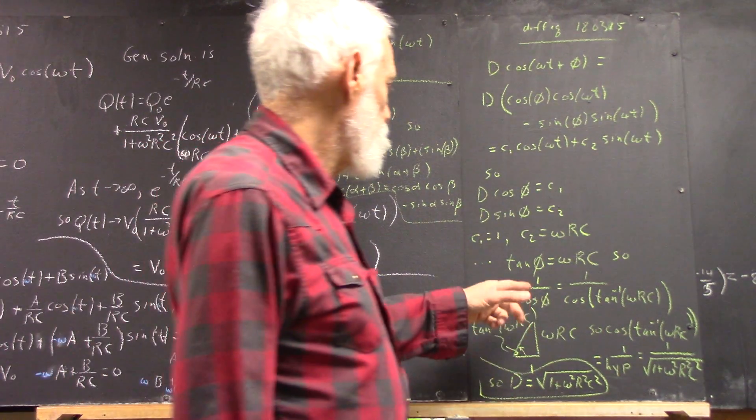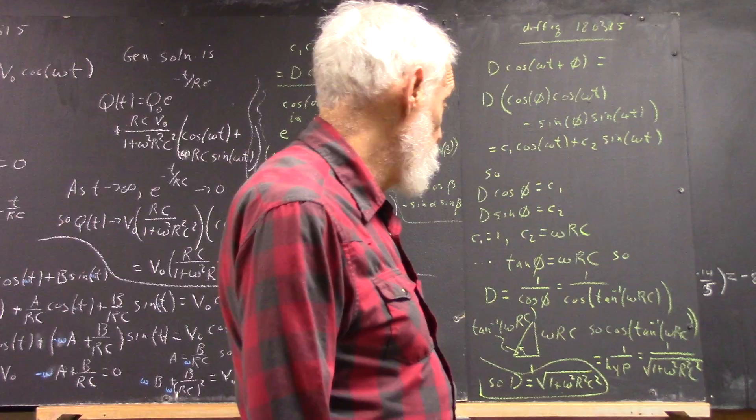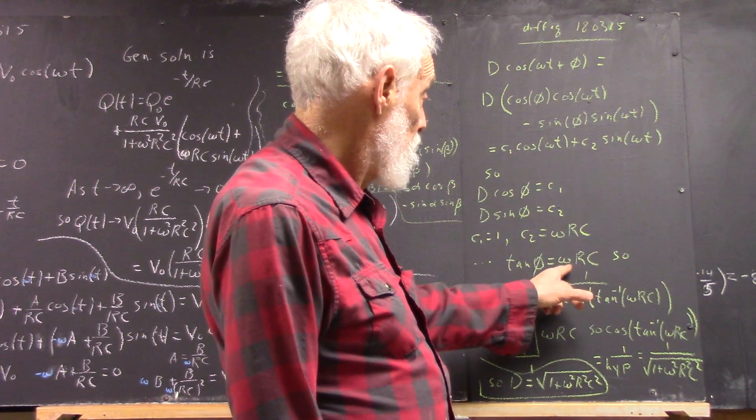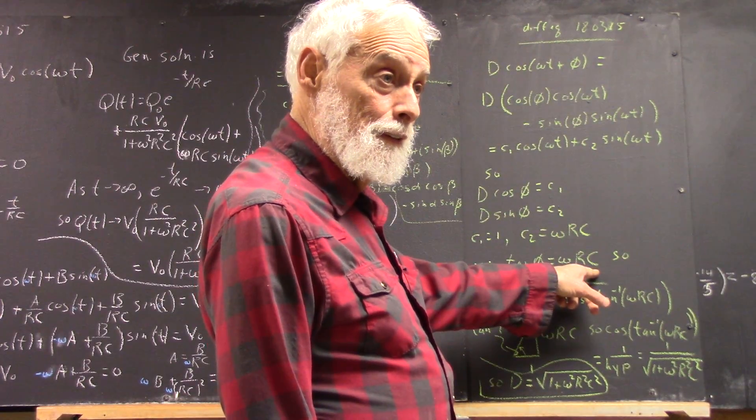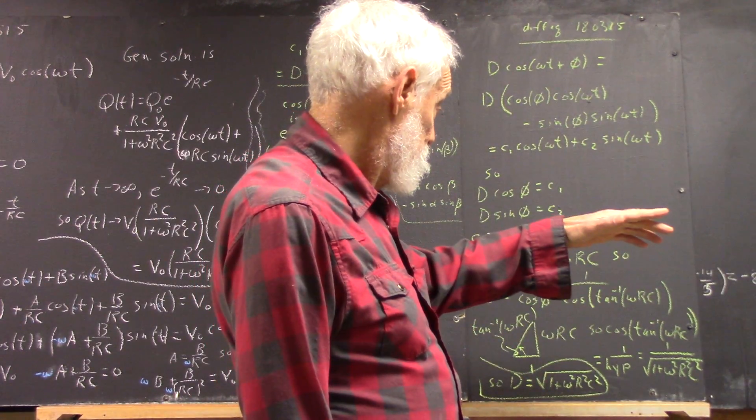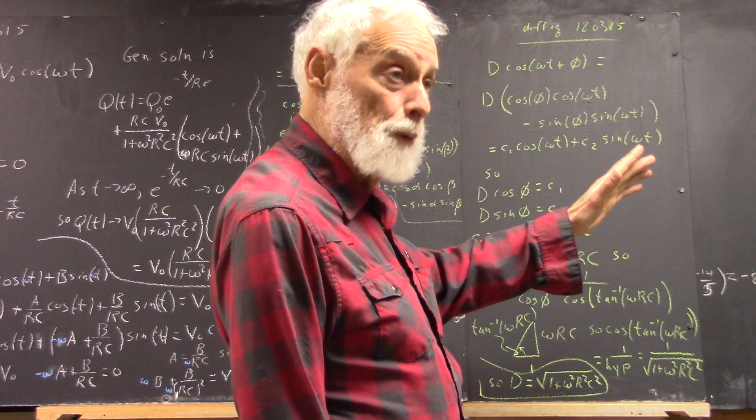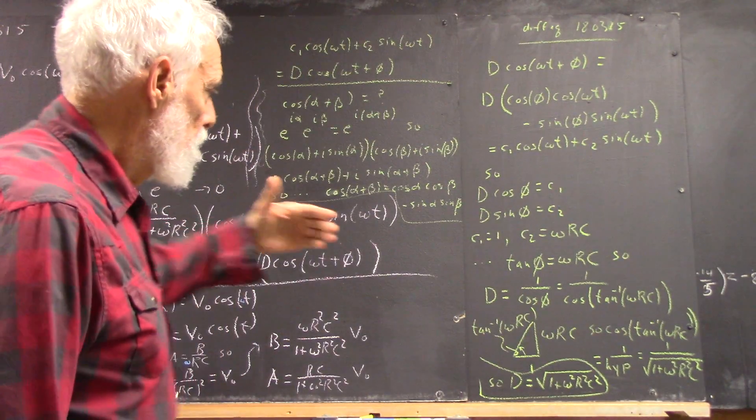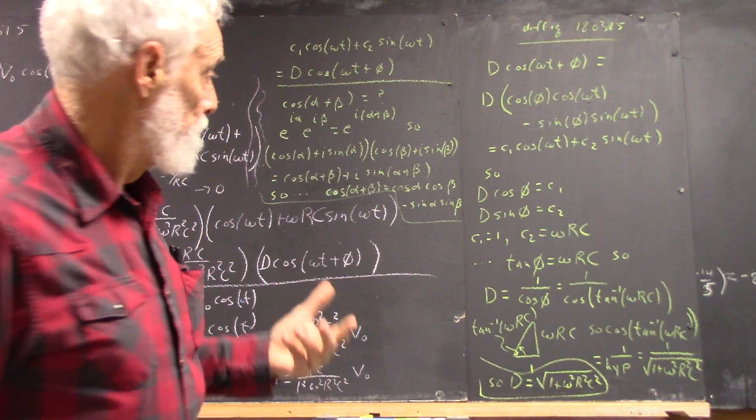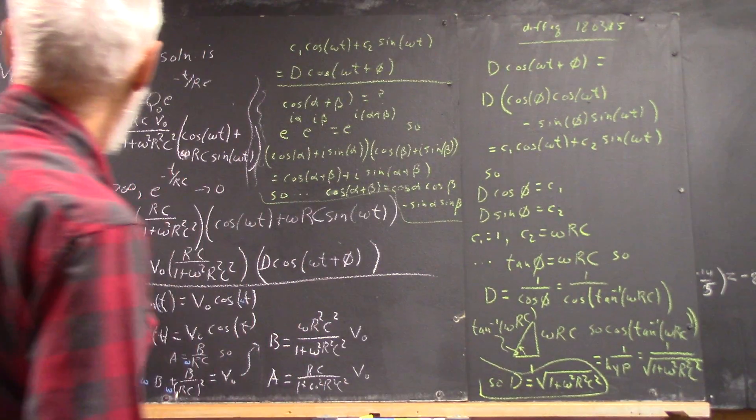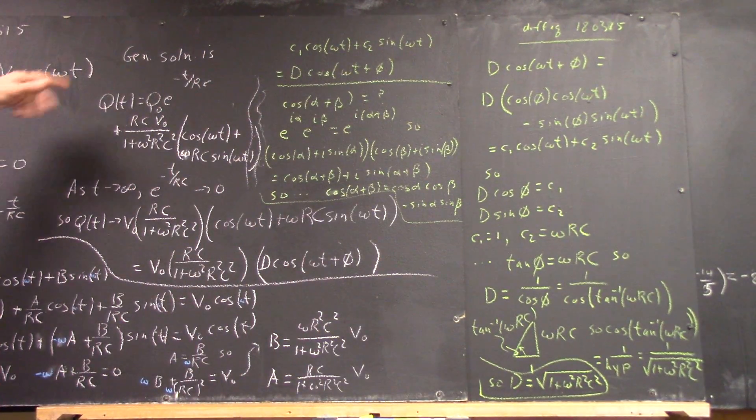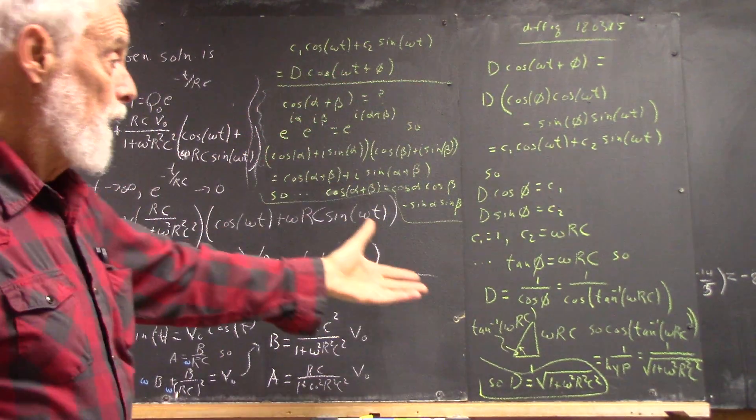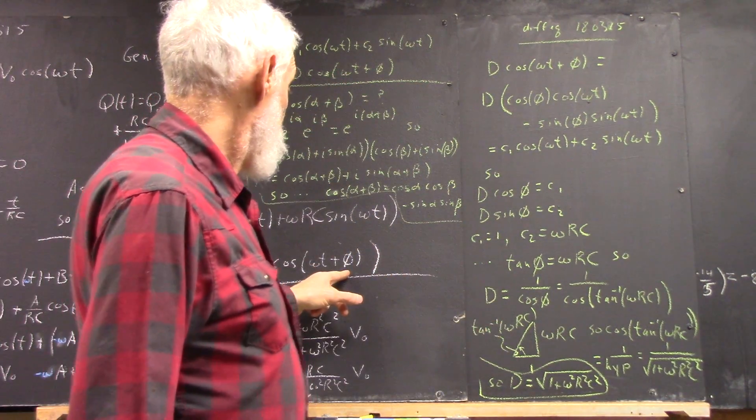And it turns out that your phase angle, which is what we're really interested in here, is just the arctangent of omega RC. Well, all these are positive constants, so it means you have a positive phase angle. Now, what does that mean in terms of the next question, which is the relationship between the driving voltage V-naught cosine of omega T and what actually happens in the circuit, which is going to have a phase angle?